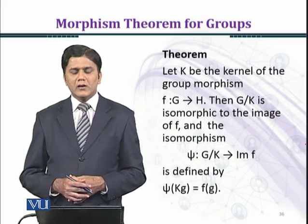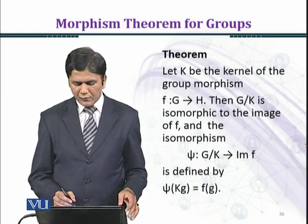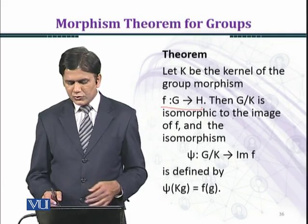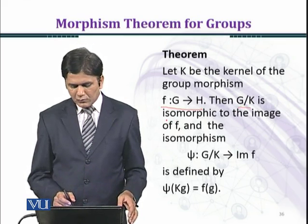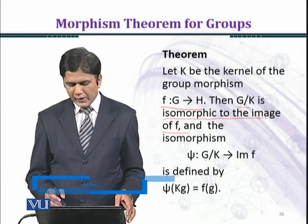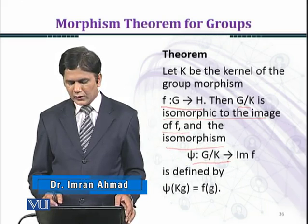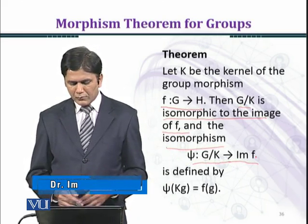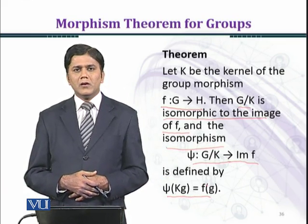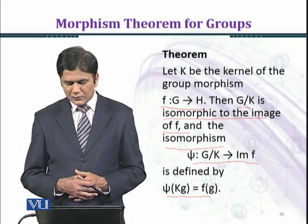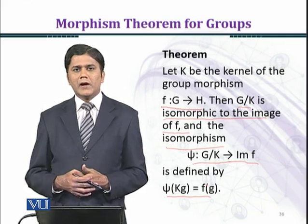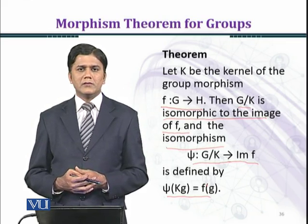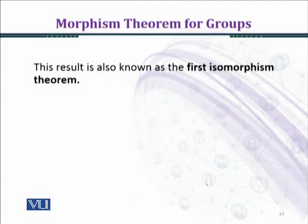Let K be the kernel of the group morphism F from G to H. Then G over K, the quotient group with kernel K, is isomorphic to the image of F. The isomorphism psi from G over K to image F is defined by psi(KG) equal to F(G). We know that K is the normal subgroup of G. This result is also known as the first isomorphism theorem.